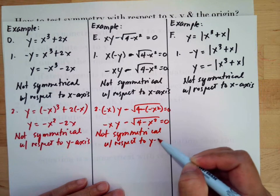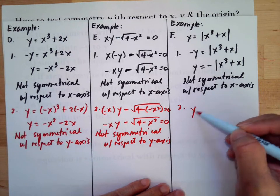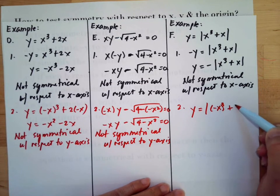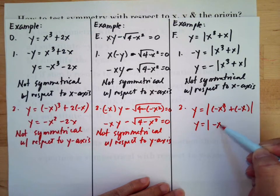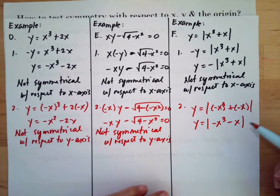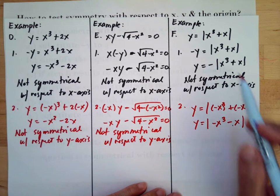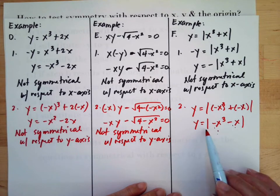For the last y-axis example, we substitute negative x into x cubed plus x, giving negative x cubed plus negative x, simplified as negative x cubed minus x. If you analyze this, it is not the same as the original, but since they are both negative inside and you are still adding the result — and when you apply absolute value, a negative result still becomes positive.